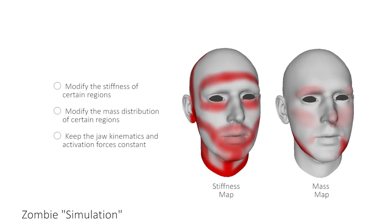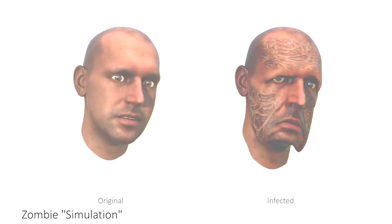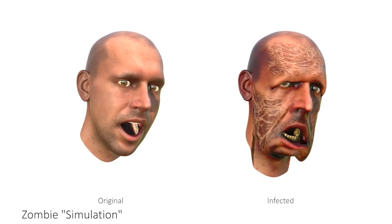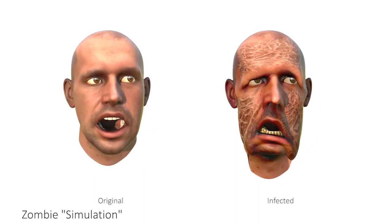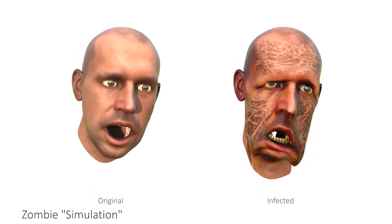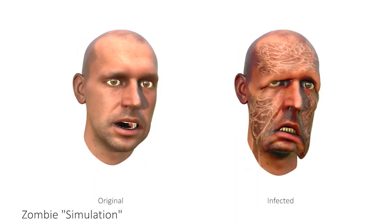For our last example, we show how our system can be used to obtain more extreme, non-realistic effects. In order to recreate the look and feel of a zombie, we paint two UV maps that modify the stiffness as well as the mass distribution in the digital face. The simulation automatically produces the hanging and jiggling of the flesh. Note that apart from the texture, no mesh or blend shape has been altered.